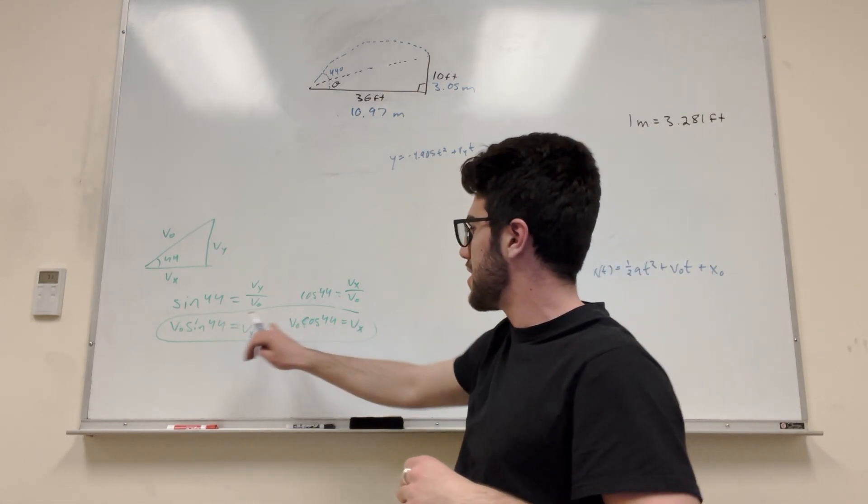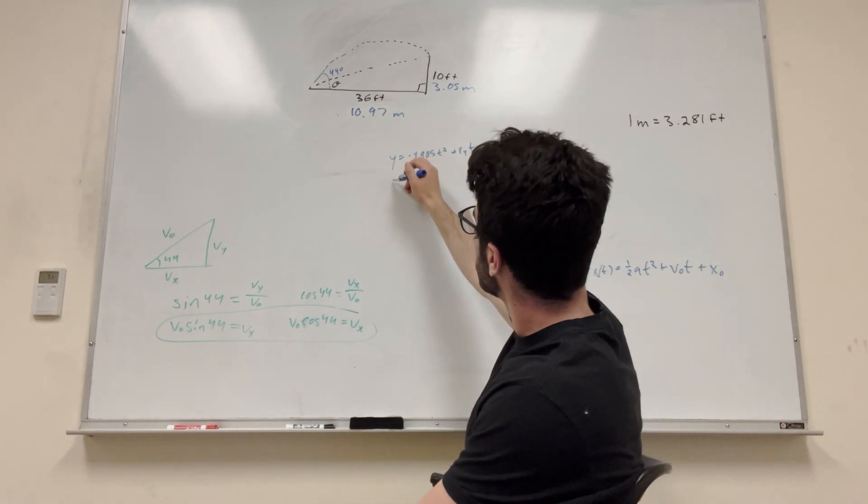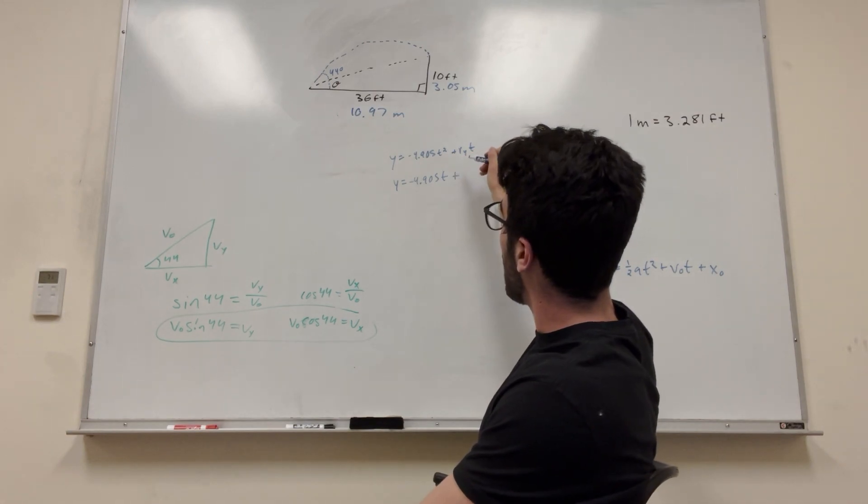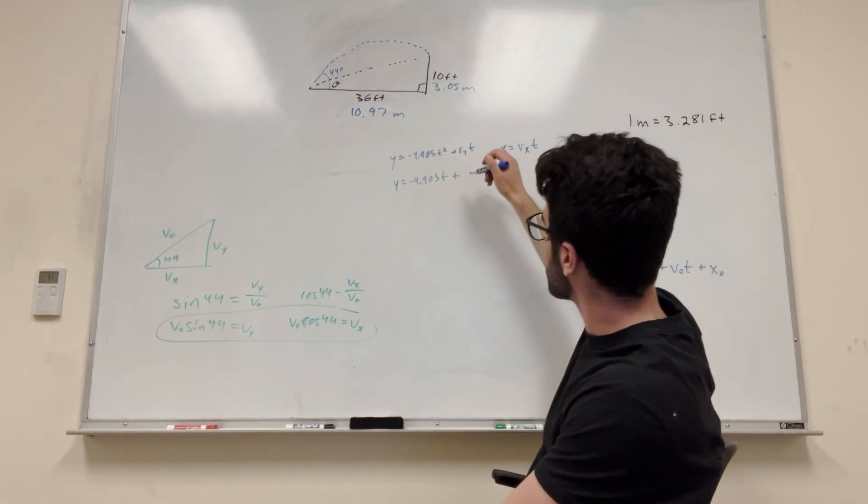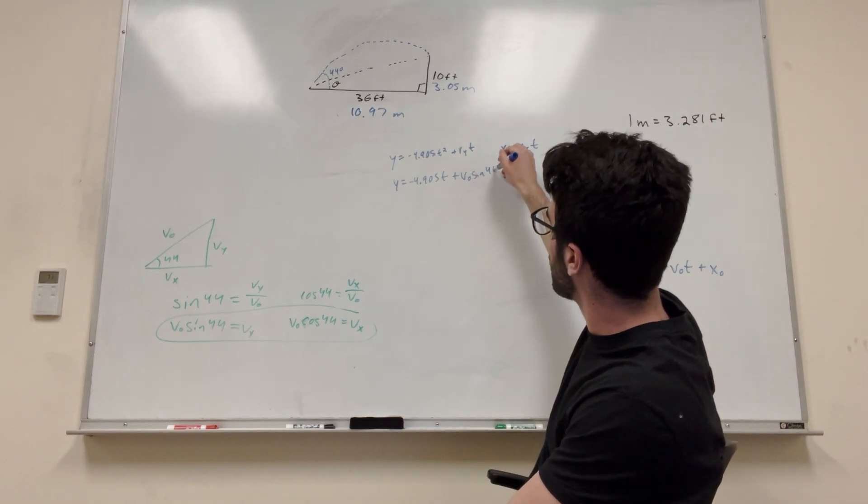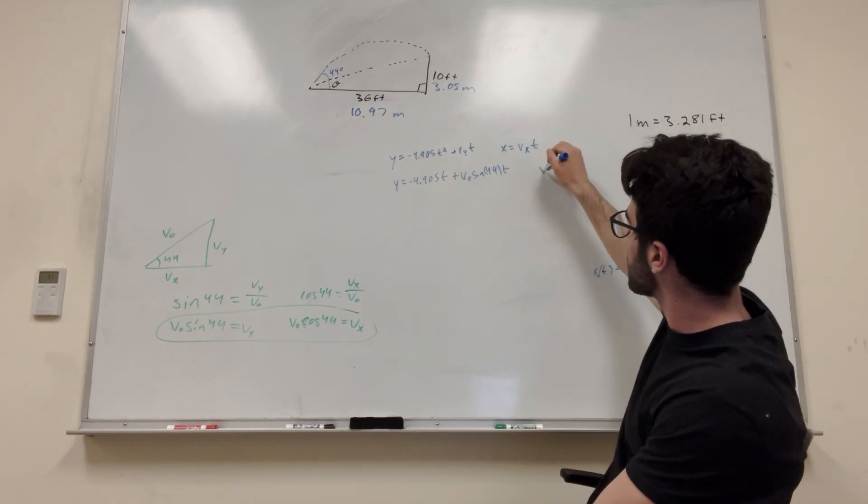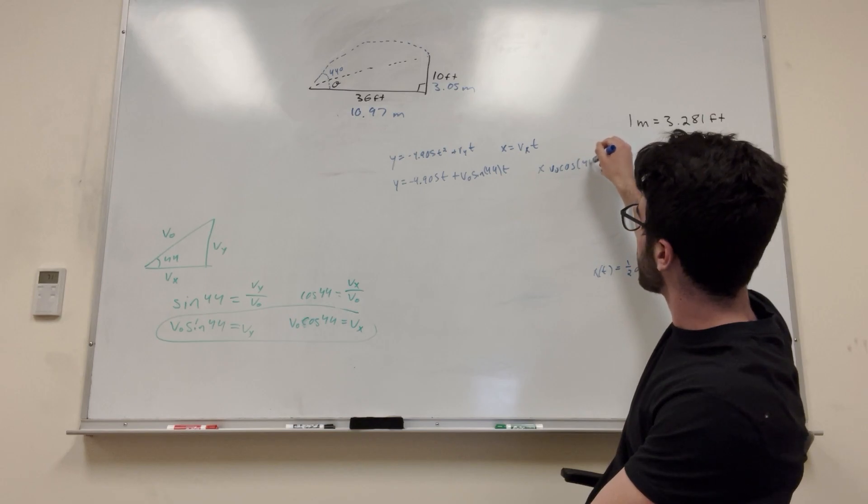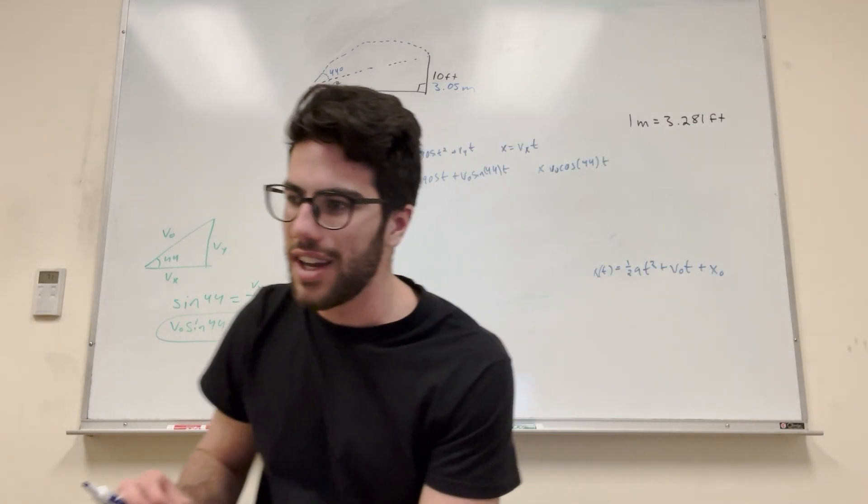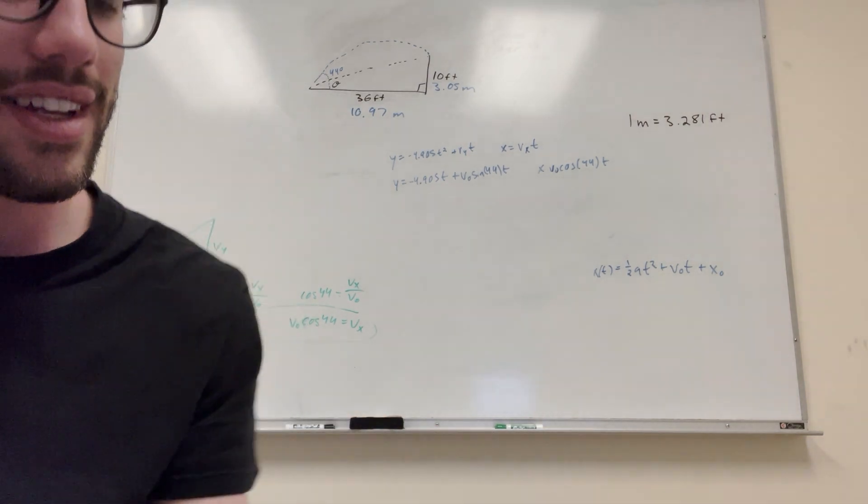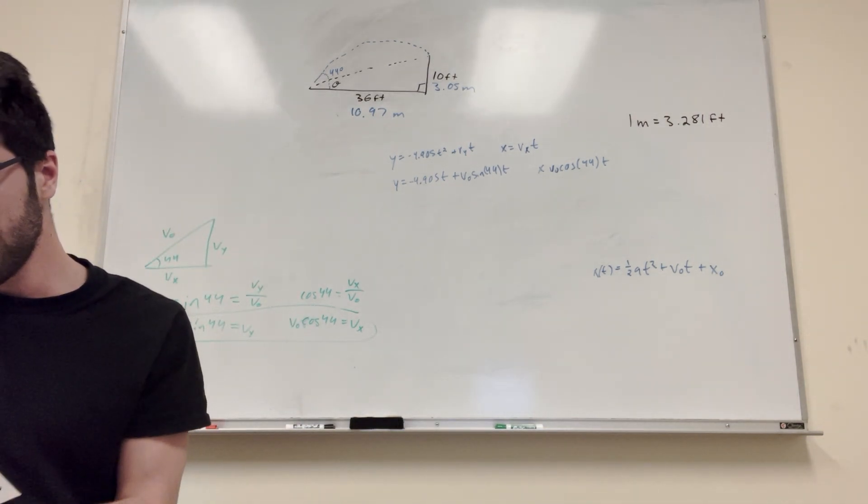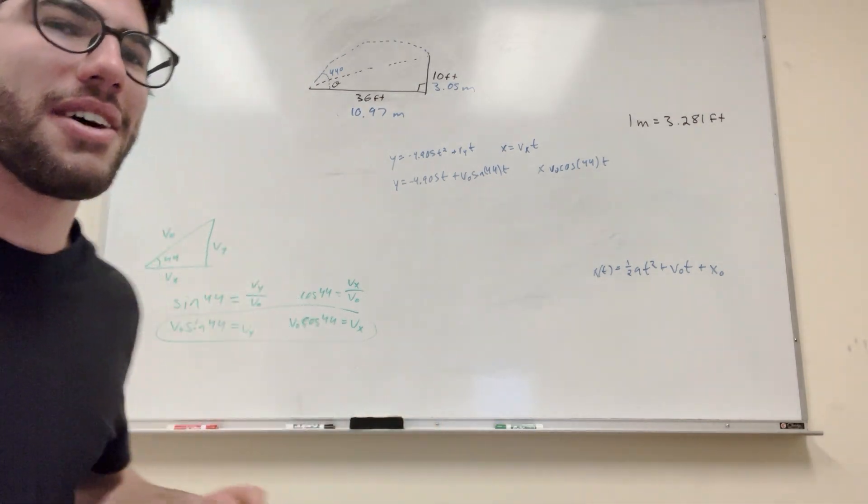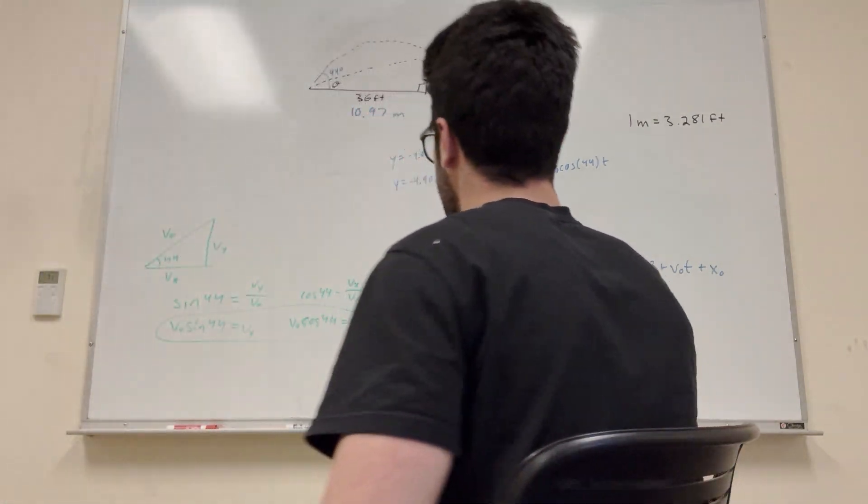So these are two equations. Now what we can do is we can plug in these two into there to get V-naught in both of our equations. So Y is equal to negative 4.905 T squared plus V-naught, but V of Y is equal to V-naught sine of 44. So if we say V-naught sine 44 T. And then we can do the same for X but with cosine instead. So this is going to be equal to V-naught cosine 44 T. Now I'm going to make sure that I did this right because I messed up last time and it took me a lot of time, and I don't want to do that again. So Y is the sine. Yes. I did it right this time.